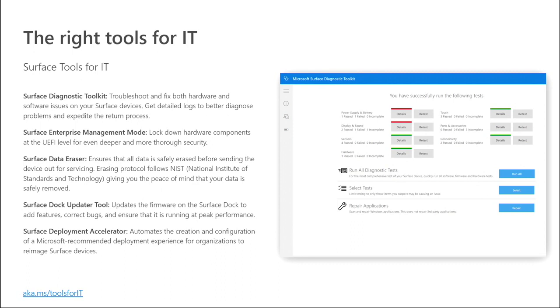The first one we want to talk about is Surface Diagnostic Toolkit for Business. This is a really great way of troubleshooting your devices, getting into the nitty-gritty of what may be going on at a hardware level but also at a software level, and providing you a lot of really helpful logs to dive a little bit deeper, troubleshoot, self-maintain, or when it comes to servicing the devices, expedite that claims process.